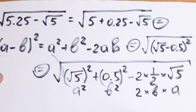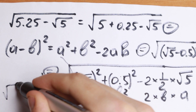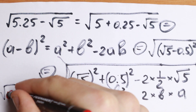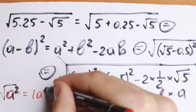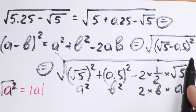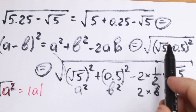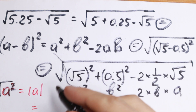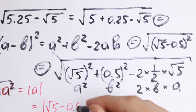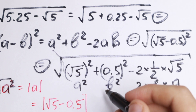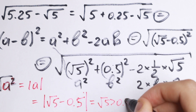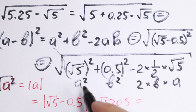We need to know one more thing: if we have the square root of A squared, that equals the absolute value of A. So taking the square root from the second power gives us the absolute value of A. As a result, this expression equals the absolute value of (√5 minus 0.5).